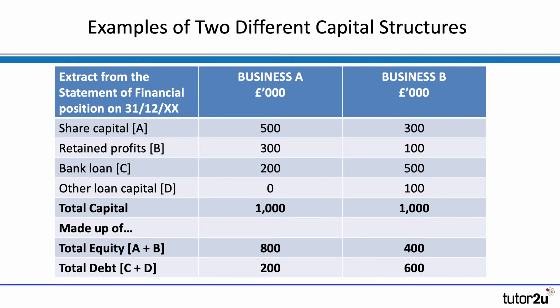Business A has £800,000 of the million in terms of equity: £500,000 of share capital and £300,000 of retained profits. That equity totals £800,000 — four times as much as the debt, which is just £200,000.